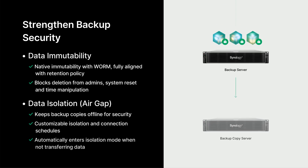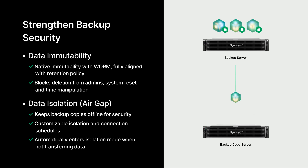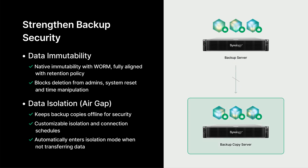Besides immutability, Active Protect features a smart air gap that keeps backup copies safely offline. During scheduled backups, the system tracks data transfer in real-time and disconnects as soon as the backup is done, reducing exposure to ransomware threats.